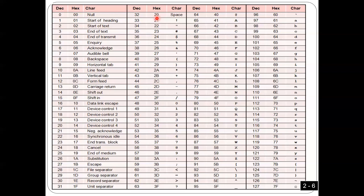Every character has an ASCII code — asterisk, plus, minus, comma, dollar sign, and even space (ASCII 20). To display a zero character you don't send 0, you send 30 hexadecimal. One is 31, and so on. To convert an ASCII digit to its numeric value, subtract 30. To convert a number to its ASCII representation, add 30. For example, number 7 becomes ASCII 37.